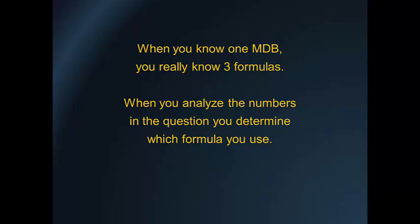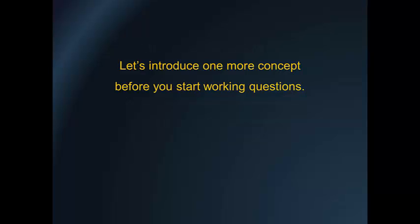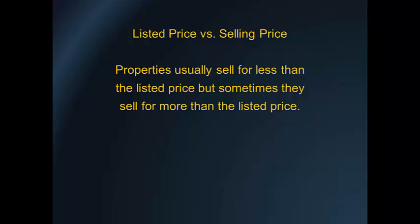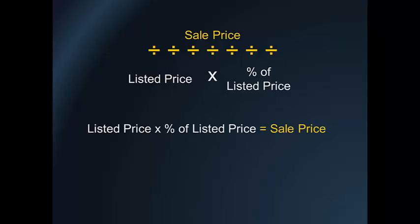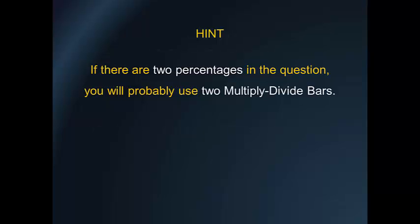Let's introduce one more concept before you start working the questions: listed price versus selling price. Properties usually sell for less than the listed price, but sometimes they sell for more. The multiply-divide bar formulas are: listed price times percent of listed price equals sale price; sale price divided by listing price equals percent of listed price; sale price divided by percent of listed price equals listed price. Hint: if there are two percentages in the question, you will probably use two multiply-divide bars.